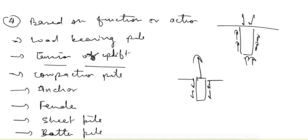Compaction pile: in some cases we take a short pile and try to compact the soil. Because of the driving of the pile, the soil is compacted. That way it is called a compaction pile. Anchor pile: if we are trying to support or hold some horizontal load — for example, this is a retaining wall and we are trying to hold it — we provide an anchor pile to support this horizontal load or horizontal pull. Then it is called an anchor pile.